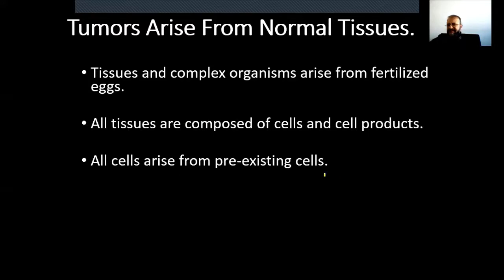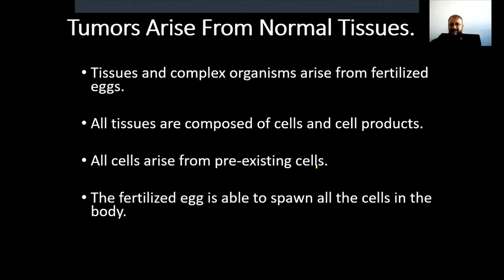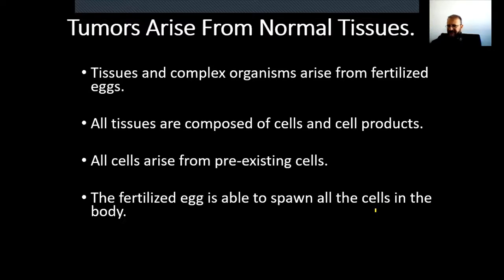All cells arise from pre-existing cells — this is cell theory. The fertilized egg is able to spawn all the cells in the body. In an adult organism, there are hundreds of thousands of different cell types and millions of cells, but all of them arise from a single cell — the zygote — which is able to produce all different kinds of cells. You should remember the concepts of pluripotent, totipotent, and multipotent cells from stem cell biology.